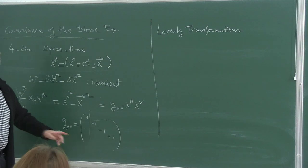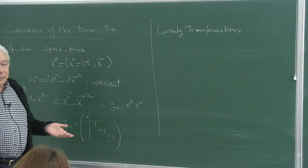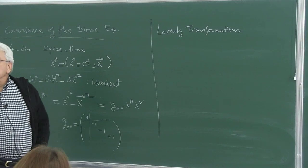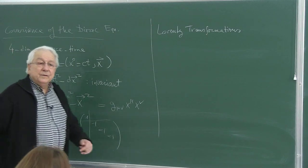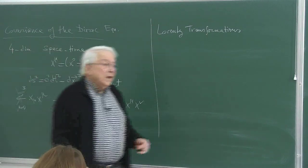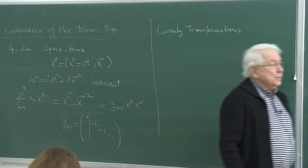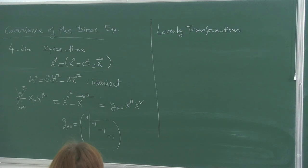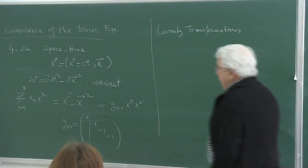It is not a Euclidean space anymore, so we have to be careful, because three-dimensional ordinary space is Euclidean: you have 1, 1, and 1 — you add the squares of each coordinate to get the invariant length.